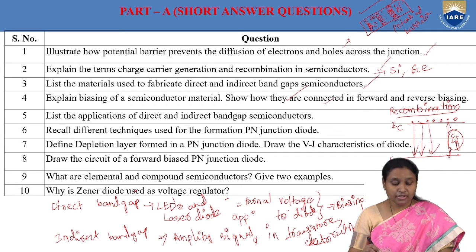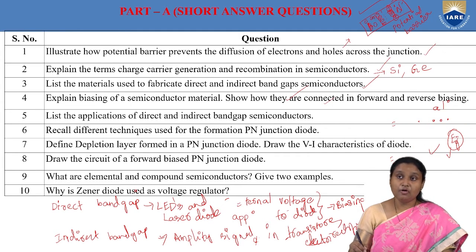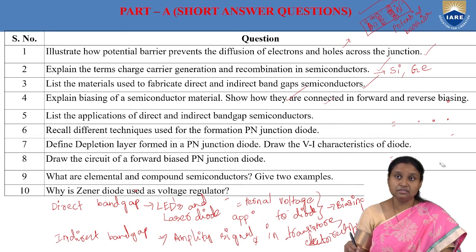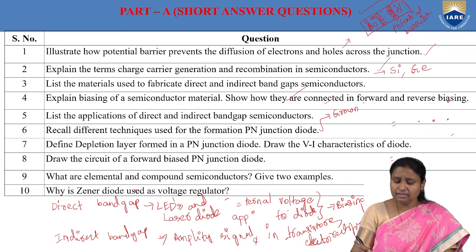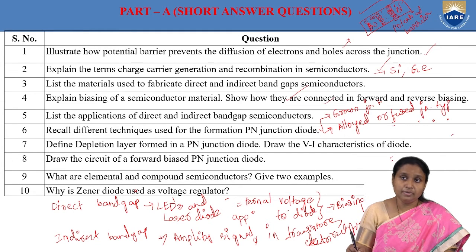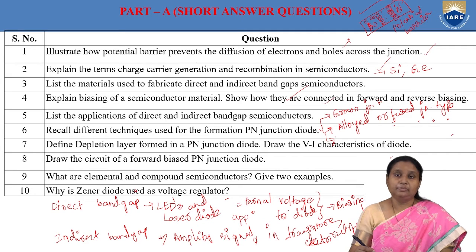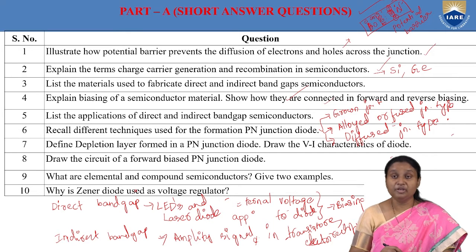Next: name the different techniques used for the formation of a PN junction diode. There are three techniques: first is the grown junction type, second is the alloyed or fused junction type, and third — the most widely used — is the diffused junction method.